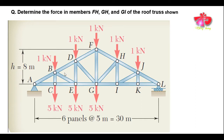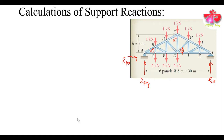This is our problem. We are having this truss — it consists of six panels of equal length of five meters, so the total length of the truss is 30 meters. We are having loads at certain joint points as shown in the figure, and we are asked to determine the member forces in members FH, GH, and GI.